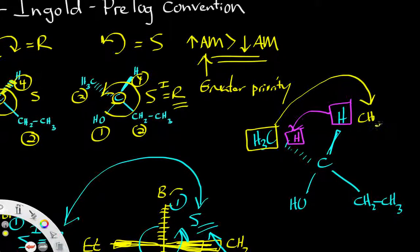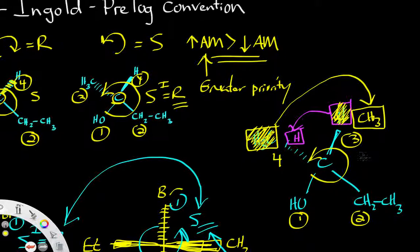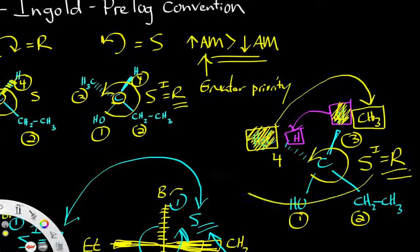Recounting priorities: oxygen is 1, ethyl is 2, the new methyl is 3, and hydrogen is 4. Counting in a counterclockwise fashion gives S, but there was inversion due to the swap, so we end up with R — exactly the same answer as before. So it does work and make sense. Hopefully this will prevent future discrepancies on tests, homework, or whatever you're working on.